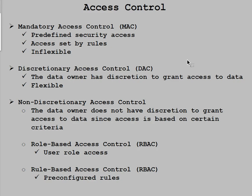The last type is Non-Discretionary Access Control. This works based on your position or role — for example, a system administrator has access to many different things because of their higher level of knowledge and experience. It's non-discretionary because the data owners are not the ones who provide access. It's based on where you fit into a particular rule or role. So we have both rule-based and role-based access control here.